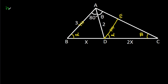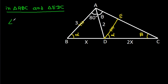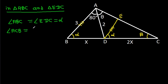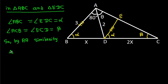Then, in triangle ABC and triangle EDC, we have angle ABC equal to angle EDC, that is alpha. And angle ACB is equal to angle ECD, that is beta. So, by angle-angle similarity, triangle ABC is similar to triangle EDC.